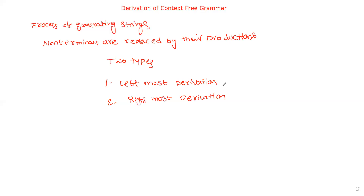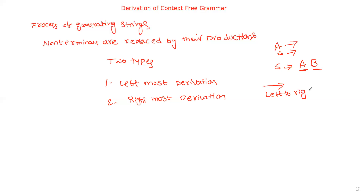For example, assume S → AB. We also have productions for A and B. In leftmost derivation, we first replace capital A with its production, and only after that do we move to capital B — scanning from left to right. In rightmost derivation, we first replace variable B and then variable A — scanning from right to left. These are the two types of derivation.